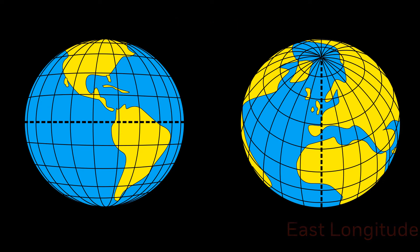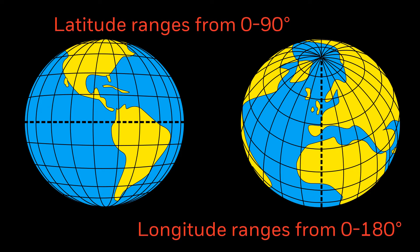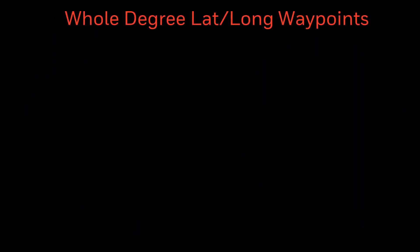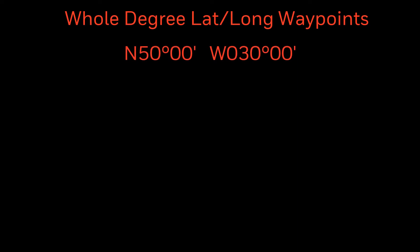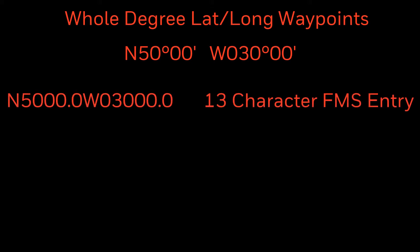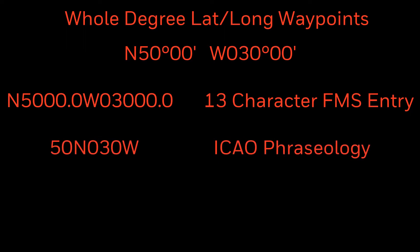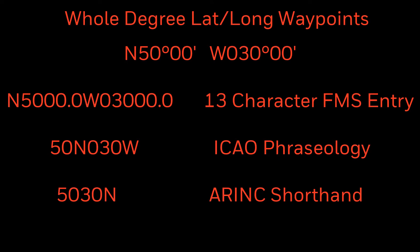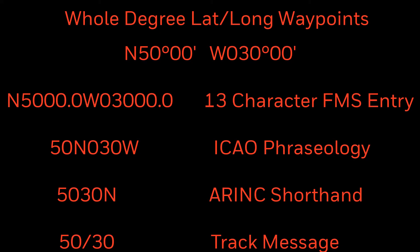Notice that latitude uses two digits ranging from 0 to 90, whereas longitude uses three digits from 0 to 180. Here's where it can get confusing. Let's take a look at a whole degree lat/long of 50 degrees north latitude and 30 degrees west longitude. This would usually be written like you see here. However, a complete entry in the flight management system would entail 13 characters in the scratch pad — 6 for latitude and 7 for longitude. The same coordinates when communicated over radio would be '50 north 30 west.' An ARINC shorthand entry would be '5030N,' and a track message would display '50/30.' Five different ways of describing the exact same point.